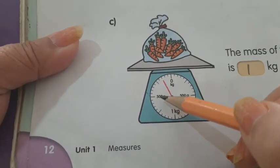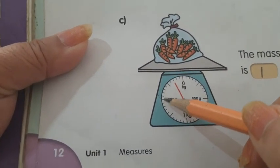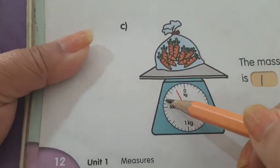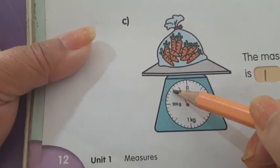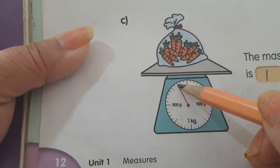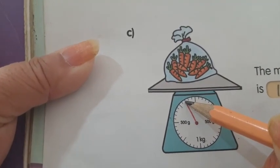And how many grams? This is 500, then 550, 600, 650, 700, 750, 800, and this is 850. So this is 1 kilogram and 850 grams.